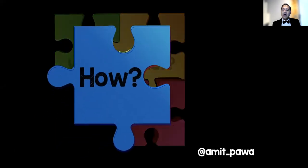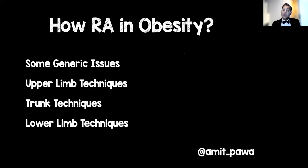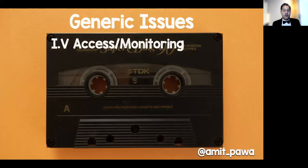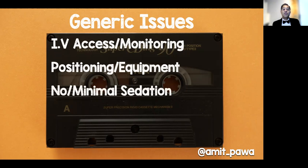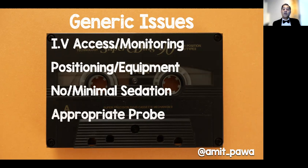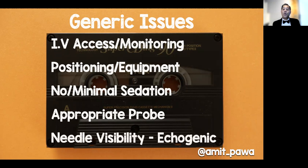Before performing regional anaesthesia, establish intravenous access and full monitoring — IV access is not always easy. Think about positioning the patient for the block and for surgery. Do you have the correct equipment and supports? Be cautious with sedation — if you're moving the patient to place a block you then have to move them back. Think about the appropriate ultrasound probe and consider using echogenic needles for improved needle visibility.